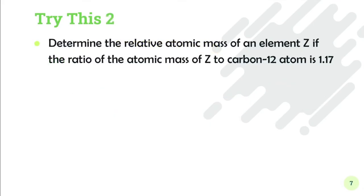Now let's try this question: Determine the relative atomic mass of an element Z if the ratio of the atomic mass of Z to carbon-12 is 1.17. So they're asking for relative atomic mass, which is Ar.